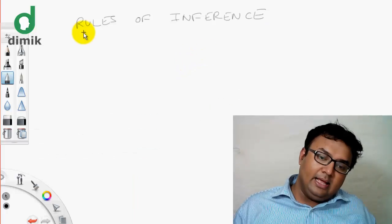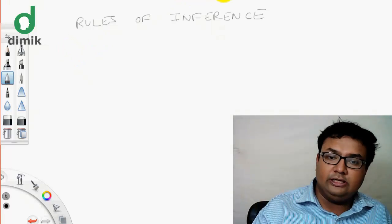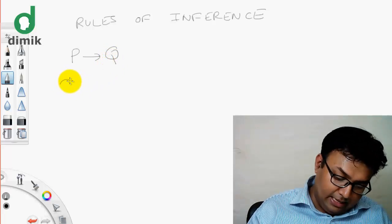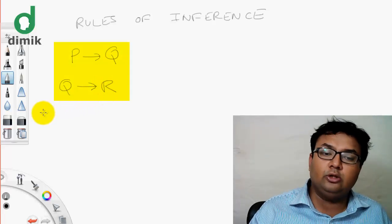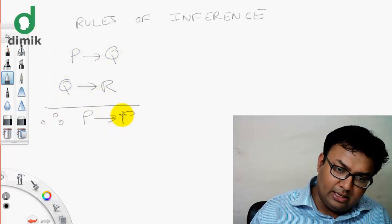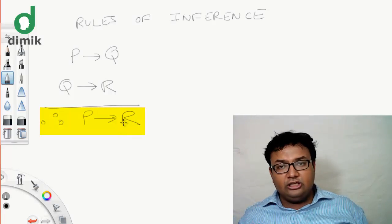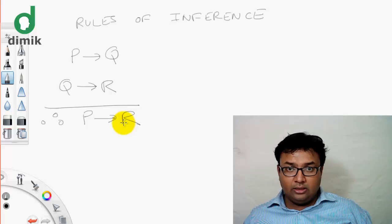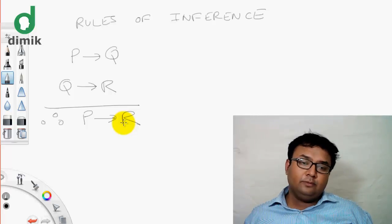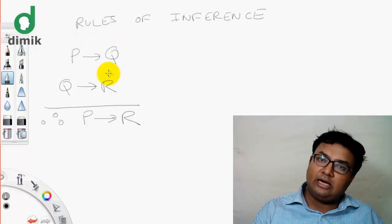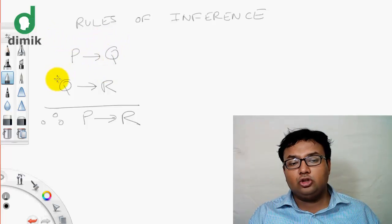Let's look at the third rule. Let's say P implies Q is true. Or P is true. Let's say Q implies R is true. The conclusion is that P implies R is true. If P is true, you're a subcut. R is a subcut. If you're a subcut, then R follows.